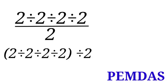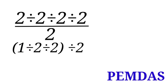This question can be rewritten as: open bracket, two divided by two divided by two divided by two, close bracket, divided by two. Even though we have division signs throughout, we still have to go from left to right. So two divided by two equals one — we now have one divided by two divided by two.